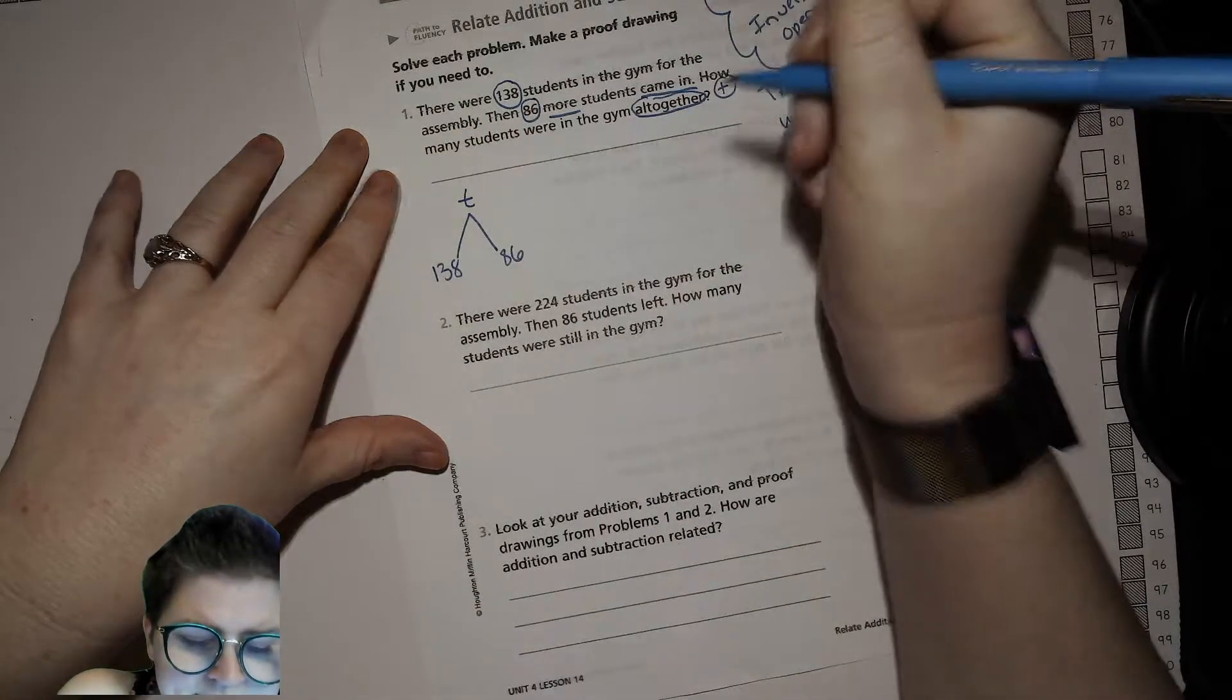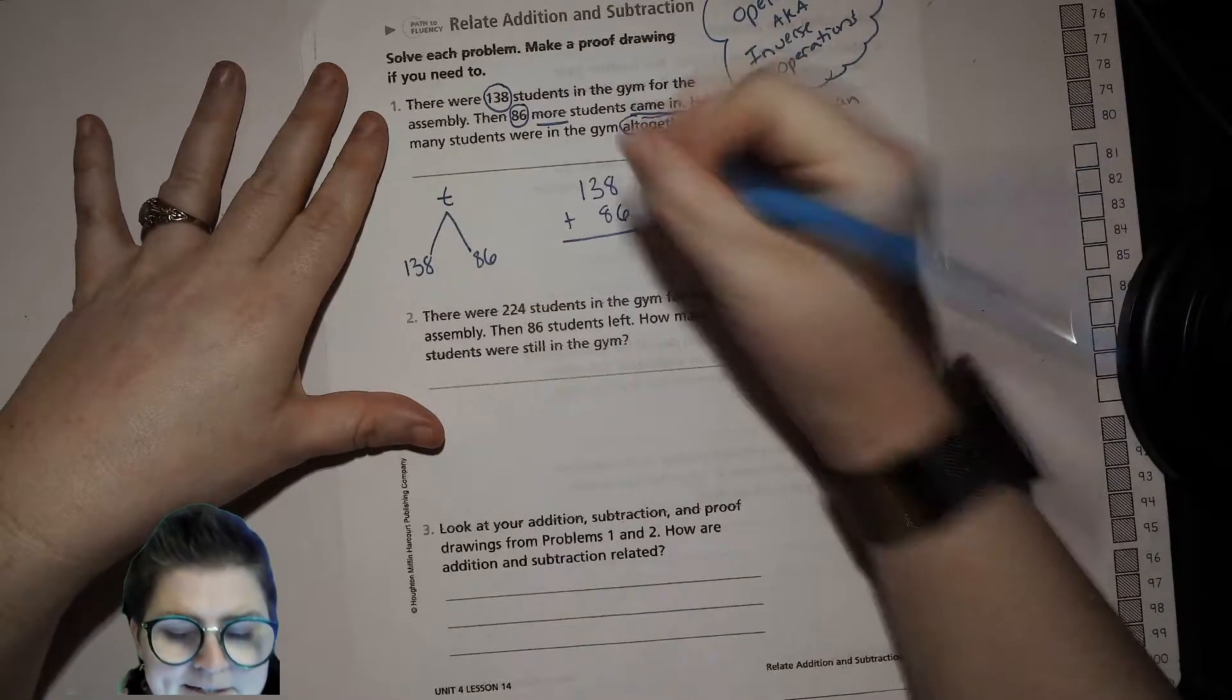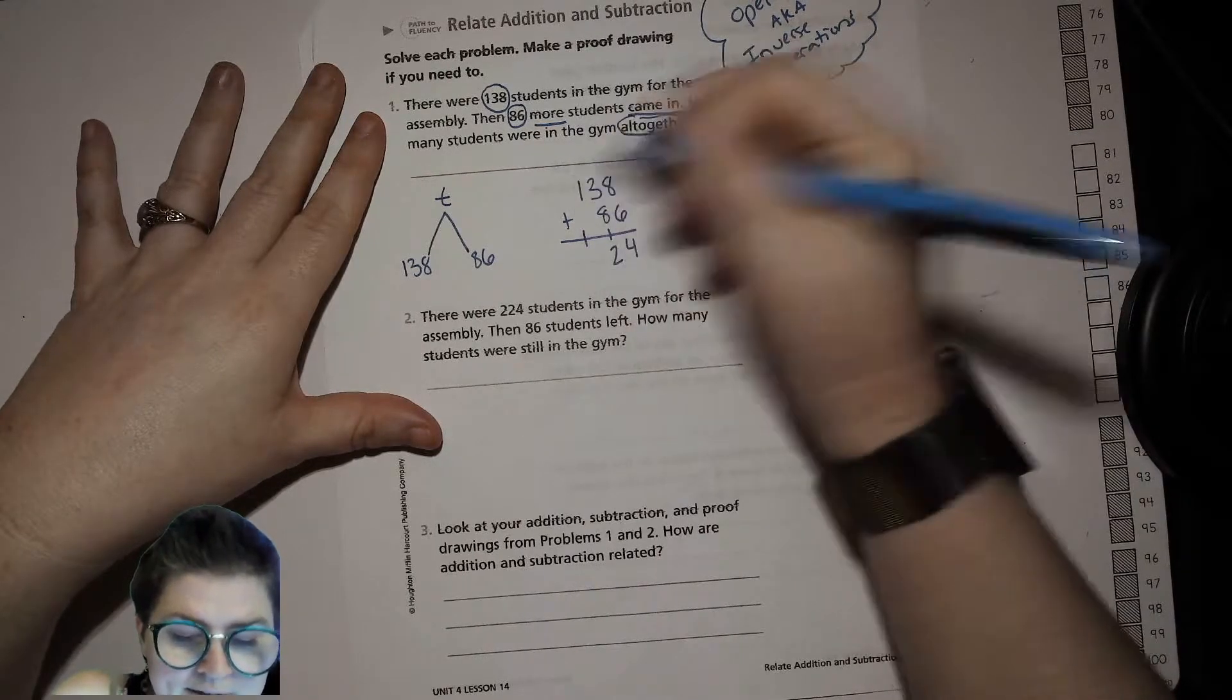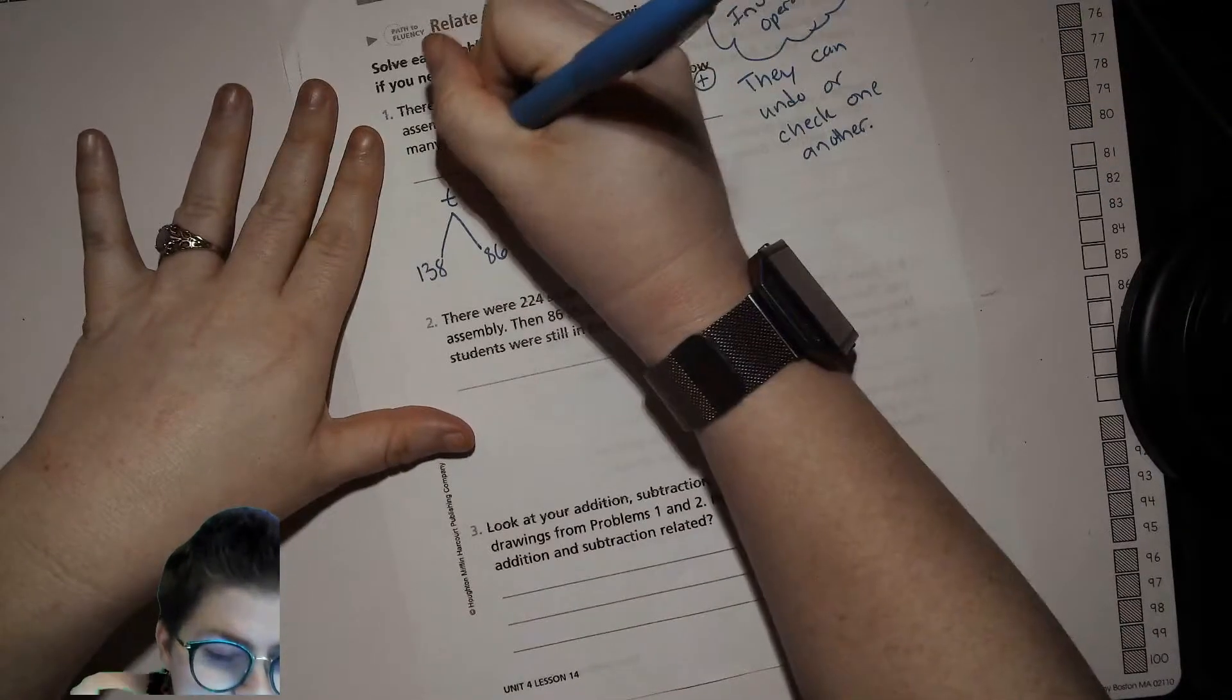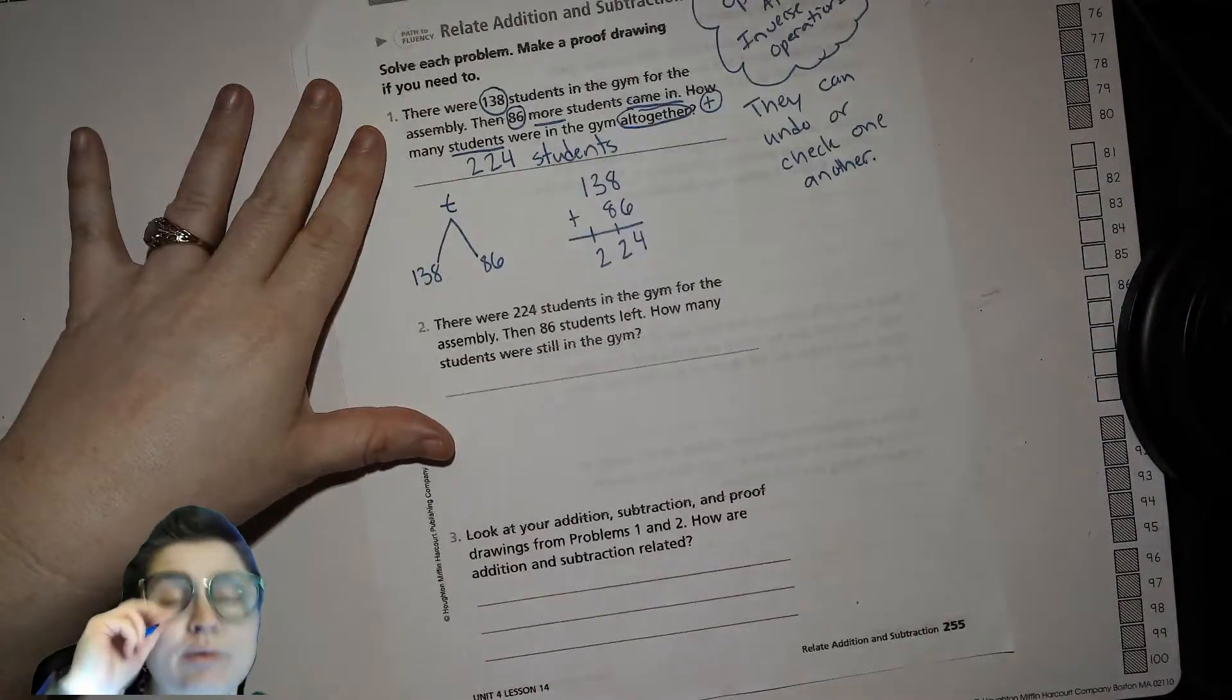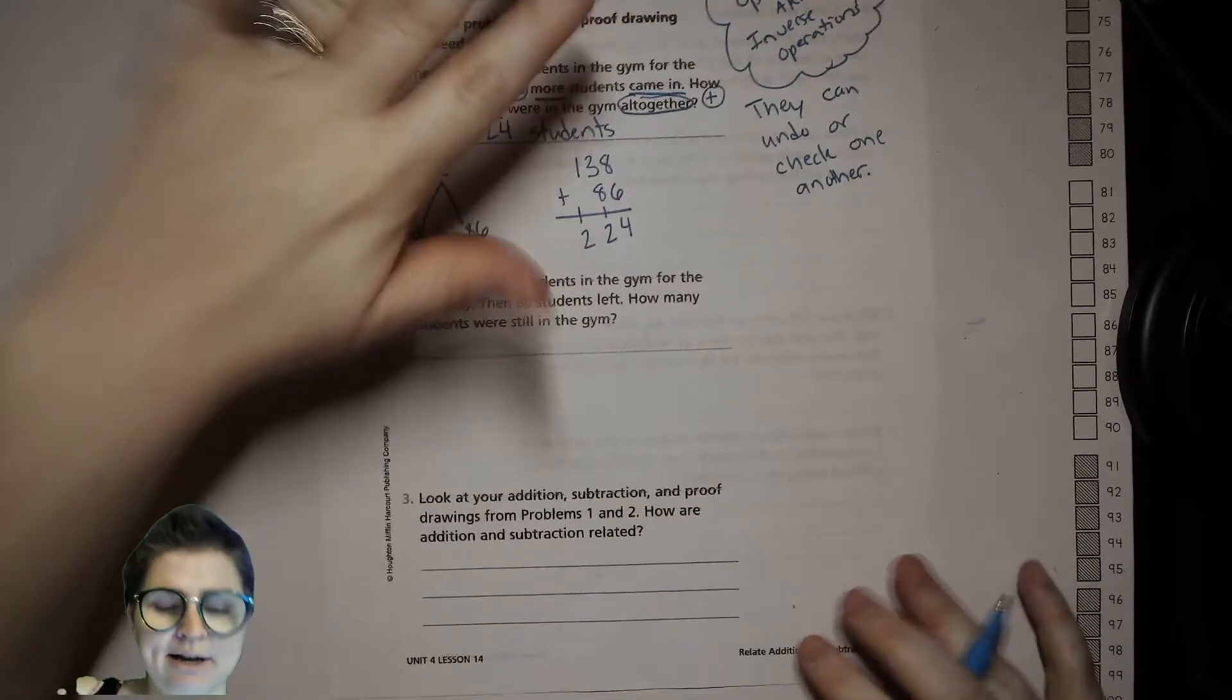To find that, I'm going to add those up, lining up my place value super carefully. 8 plus 6 is 14, 1 plus 3 is 4 plus 8 more is 12, and then 100 plus 100 is 200, so the total is 224 students. Students is what comes after 'how many,' so that's our label, and I'm going to say T equals 224 students.